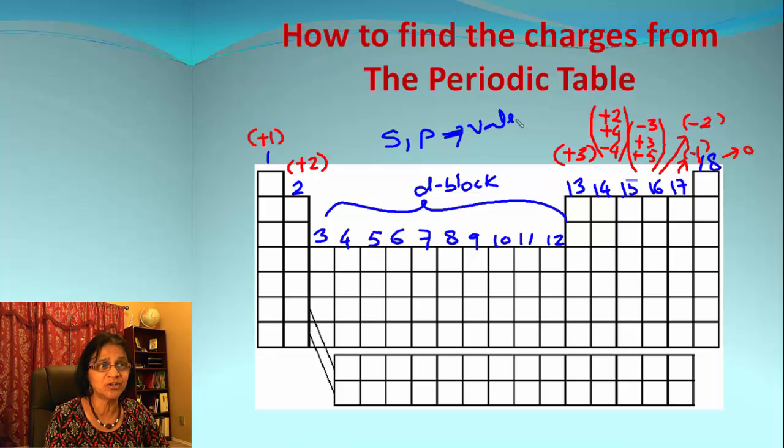Remember, s and p are the only electrons which are valence electrons, so element will try to lose or gain only in s and p subshells. So the group number 13 will have charge of positive three.